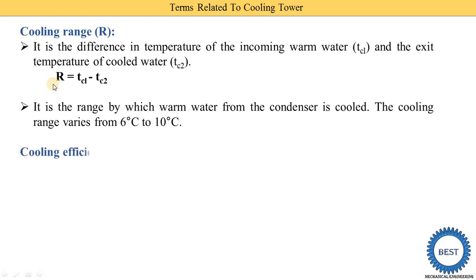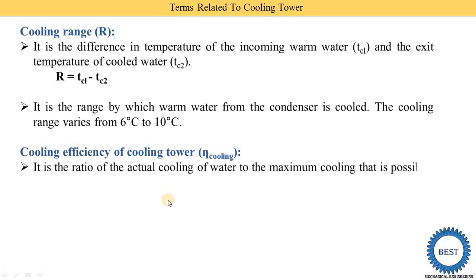The next point is the cooling efficiency of the cooling tower. It is the ratio of the actual cooling of water to the maximum cooling that is possible. The actual cooling is the inlet temperature of the warm water minus the outlet temperature (TC1 − TC2). The maximum cooling possible is TC1 − TWB, where TWB is the wet bulb temperature. So cooling efficiency = (TC1 − TC2) / (TC1 − TWB). This is called the cooling efficiency of the cooling tower.